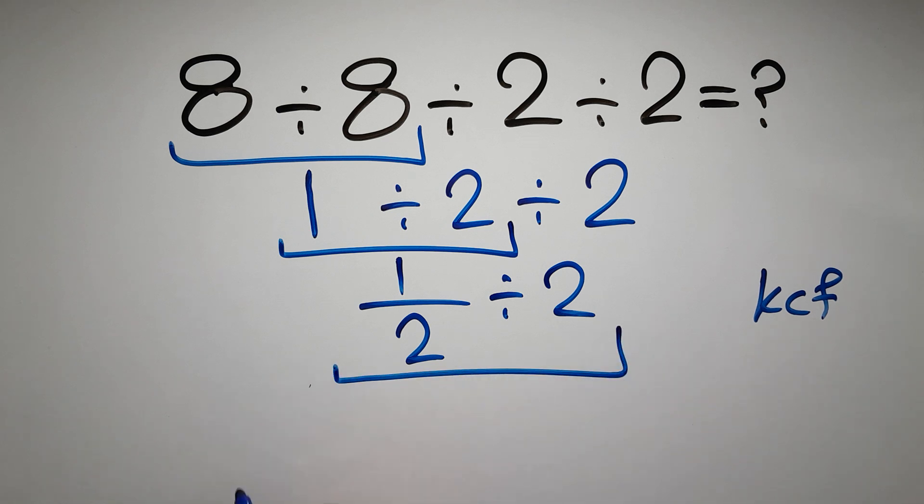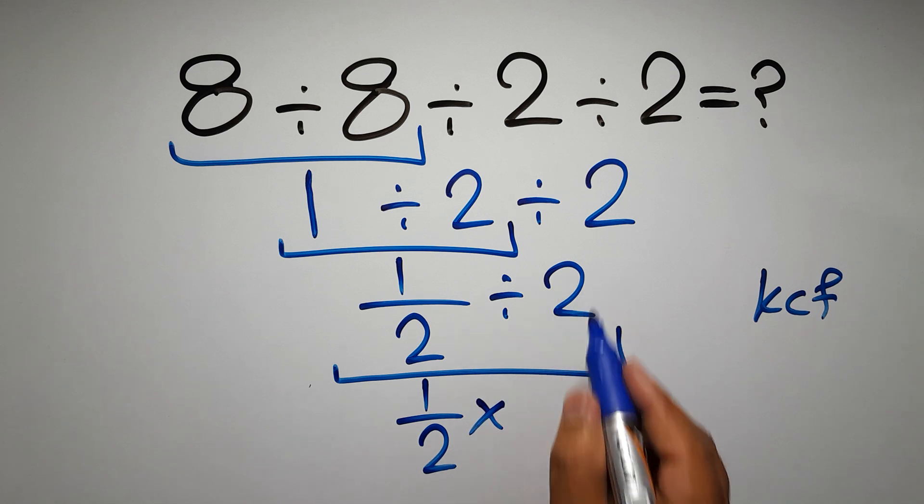We can write: keep the first fraction, change the division to multiplication, and flip the second fraction.